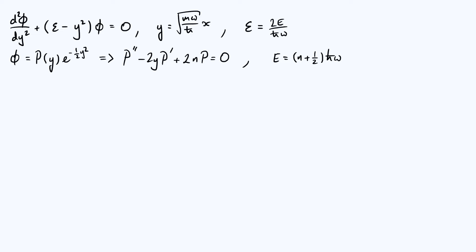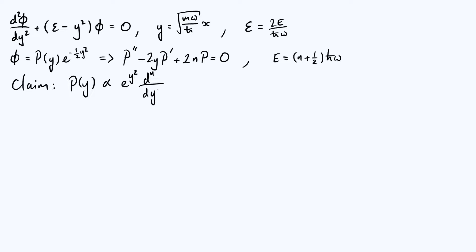But in this video we're going to look at an alternative and, in many cases, more convenient way of expressing the solutions for that differential equation for p. I'm going to start by telling you the answer and we're going to spend most of the video proving it. The claim is that p of y is proportional to e to the power of y squared times the nth derivative, d^n by dy^n, of e to the minus y squared. So this is what we're aiming to prove.